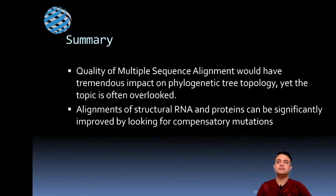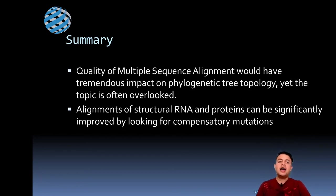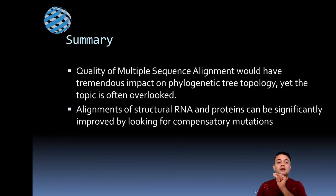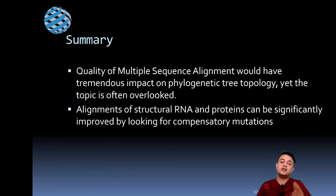In summary, the quality of multiple sequence alignment has a tremendous impact on phylogenetic tree topology, yet this topic is often overlooked. Alignments of structural RNA and proteins can be significantly improved by looking for compensatory mutations — mutations in one region of the stem loop of structural RNA necessitate mutations in another region as well.